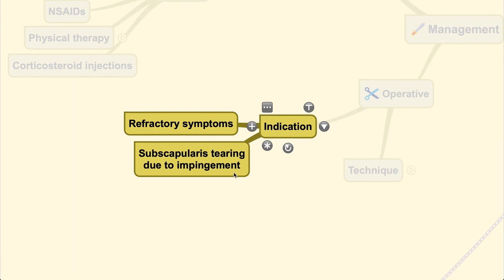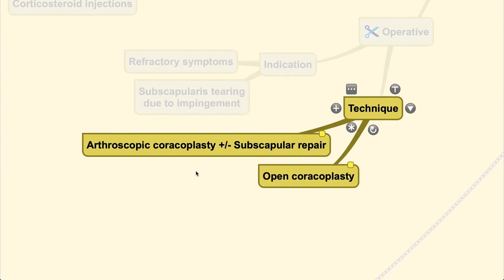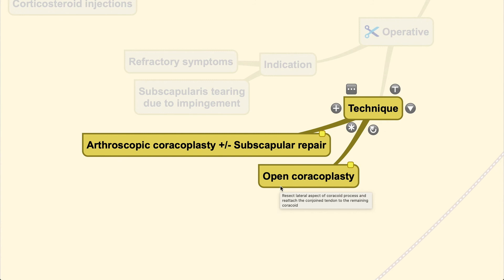Operative techniques vary but generally require coracoplasty — reconstructing the coracoid so it does not cause further impingement. This may be done alongside subscapularis repair if there is a total tear. Open surgery may be preferred over arthroscopy, and open coracoplasty is performed to resect the lateral part of the coracoid process.